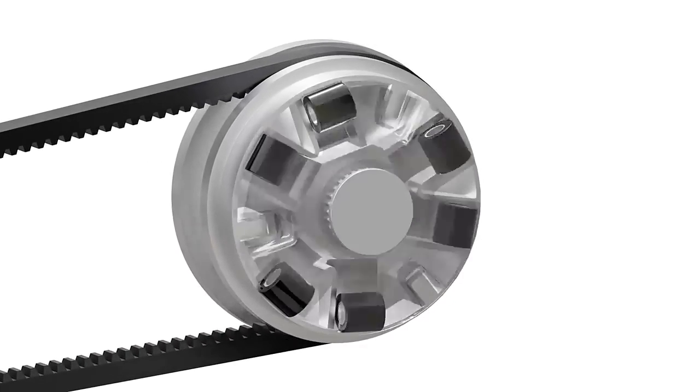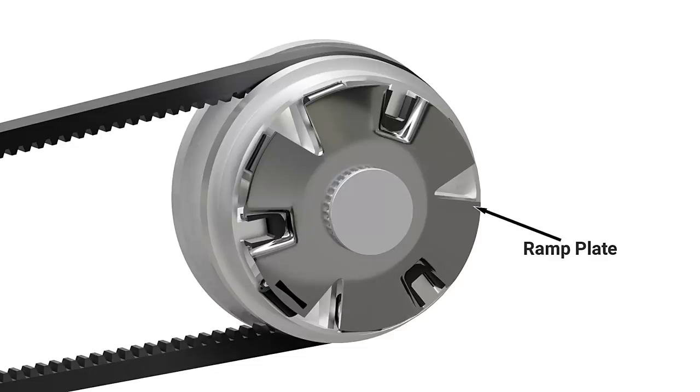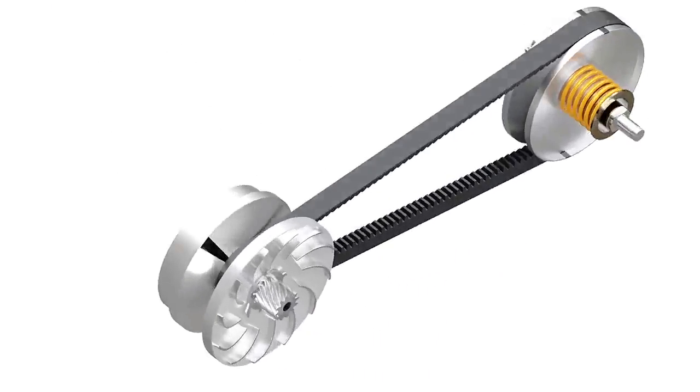These rollers push against the ramp plate. Since the ramp plate is fixed, the sliding conical plate is forced towards the other plate. Let's see the diameter change in slow motion.